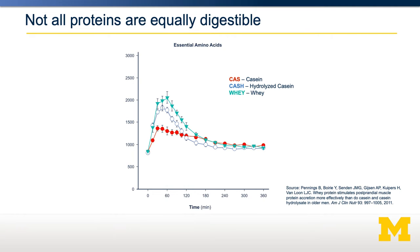Digestibility: not all proteins are equally digestible. Some proteins digest more rapidly than others. If you look at whey protein, shown in light blue, and compare that to casein, shown in red, consumption of equal amounts of these two complete proteins results in faster absorption of amino acids for whey protein, because whey protein is very easily digestible. On the other hand, casein is digested much more slowly, so the peak of amino acids in the blood is much lower. That's because the underlying structure is different when you compare casein and whey.